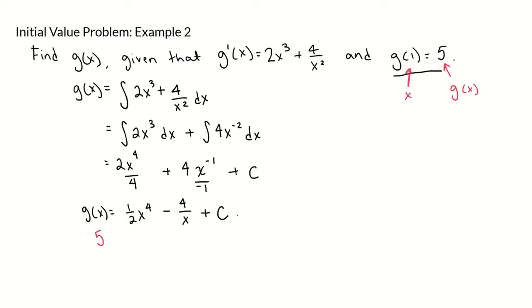So we're going to plug in 5 equals 1 to the fourth power minus 4 over 1 plus c. That will give us 5 equals 1 to the fourth power is 1 times 1 half is still 1 half, minus 4 plus c.